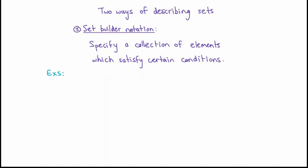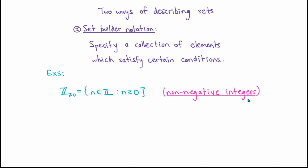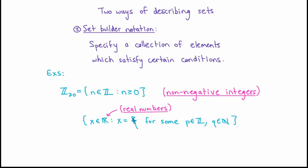Let's look at a few examples using set builder notation. The set of all integers n which satisfy the condition that n is greater than or equal to zero is just the non-negative integers, denoted by blackboard Z with a subscript of ≥ 0. The set of all real numbers x which can be written as p over q, where p is an integer and q is a natural number — blackboard R is the symbol for real numbers — is the set of rational numbers, denoted by blackboard Q.